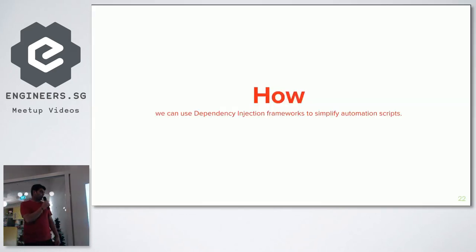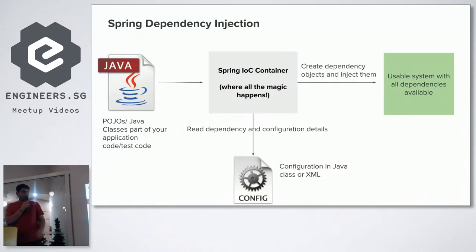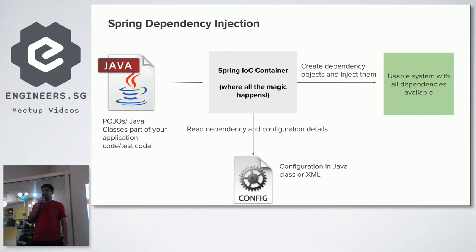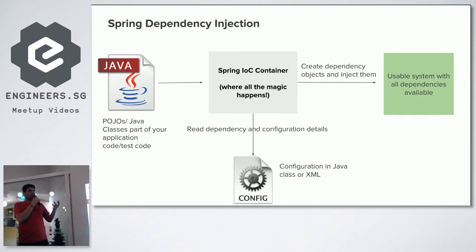Now, how can we use dependency injection frameworks to simplify automation scripts? The example we are going to see uses the Spring DI framework. Spring is not only a dependency injection framework — it's a huge application development ecosystem. Dependency injection and its IoC container is just one small part of it, and that's the part we'll focus on.